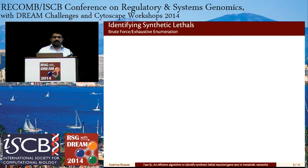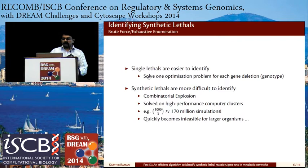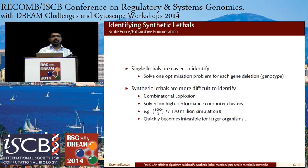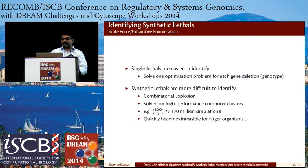One way to identify synthetic lethals is brute force or exhaustive enumeration. The idea is you solve one optimization problem to check if a particular deletion is lethal or not. This is easy for single lethals, but for double or triple lethals you face a combinatorial explosion — for an organism with just a thousand genes, you're looking at something like 170 million simulations, which takes quite a long while.